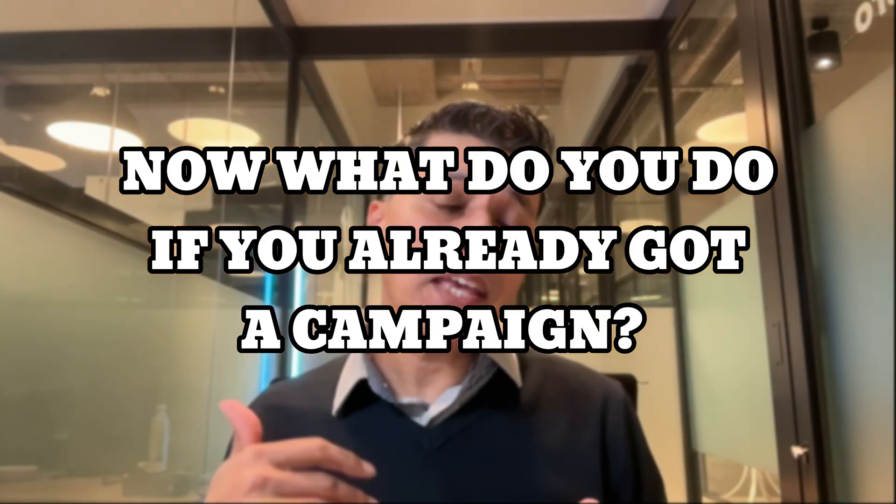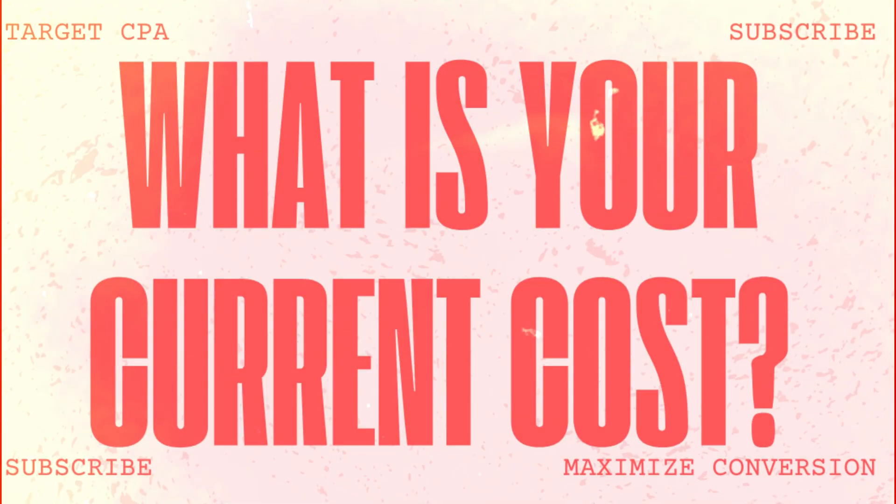What do you do if you've already got a campaign that's not using Maximize Conversions but you want to switch over? First, look at what your current cost per acquisition or cost per action is. One option is to set your target CPA to match your current CPA — so if you're currently converting at $60, set it to $60. Alternatively, you can leave it blank and let the algorithm relearn. Once it has relearned, after two to three weeks, you can start making adjustments and then set a target CPA.